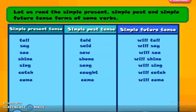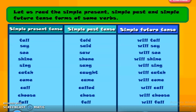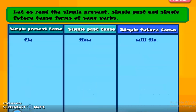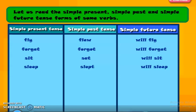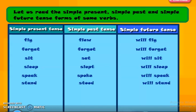Come — came — will come. Call — called — will call. Choose — chose — will choose. Fall — fell — will fall. Fight — fought — will fight. Fly — flew — will fly. Forget — forgot — will forget. Sit — sat — will sit. Sleep — slept — will sleep. Speak — spoke — will speak. Stand — stood — will stand.